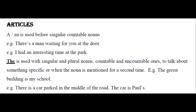Articles: 'a' or 'an' is used before singular countable nouns. You can say 'There is a man waiting for you at the door' or 'I had an interesting time at the park.'